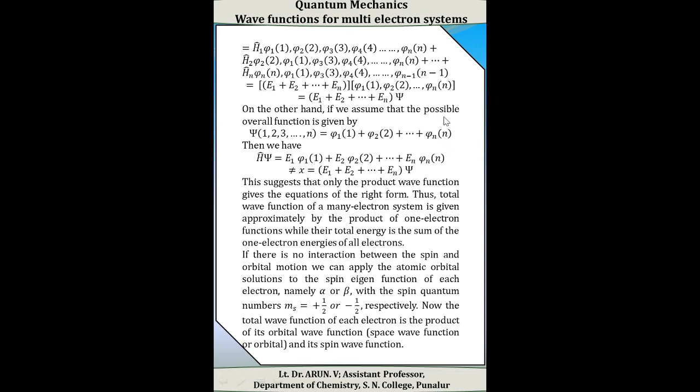On expanding this, we know that H-cap₁ operates only on φ₁(1), therefore we get H₁φ₁(1) · φ₂(2) · φ₃(3) · φ₄(4) · ... · φₙ(n). This gives the sum of energy terms multiplied by the wave function, that is (E₁ + E₂ + ... + Eₙ) · φ₁(1) φ₂(2) ... φₙ(n).